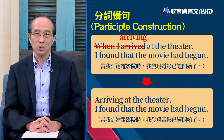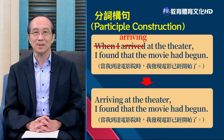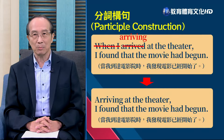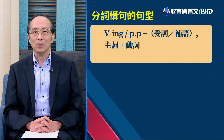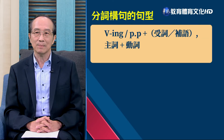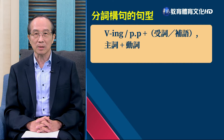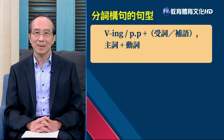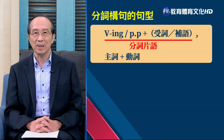於是分詞構句就完成了，變成：「Arriving at the theater, I found that the movie had begun.」我們可以總結分詞構句的句型如下：V-ing（現在分詞）或PP（過去分詞），加受詞或補語，逗點之後再加主詞、再加動詞。其中V-ing或PP加受詞或補語這個部分，我們就稱為分詞片語。